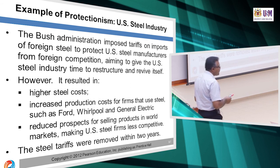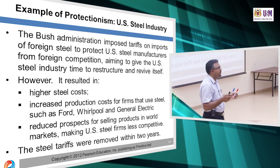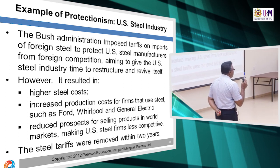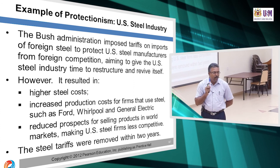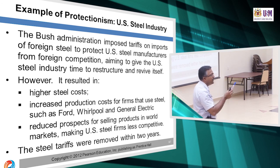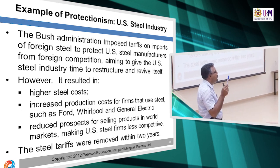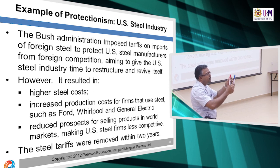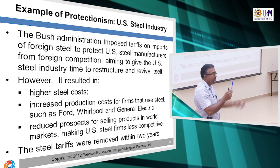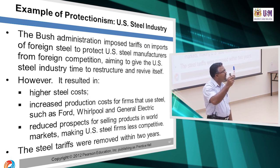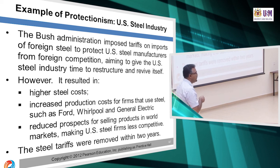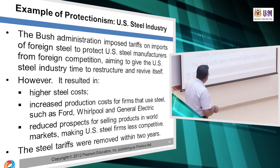When the steel price went up because of the tariff, everyone suffered — even the local companies. Lower productivity resulted because of too much protectionism. When the government protects companies, they may not be innovative to improve productivity. Price increases, quality drops, and business slows down domestically. That's why the steel tariffs were removed within two years.